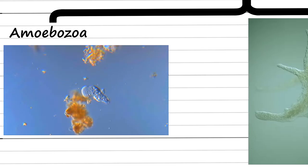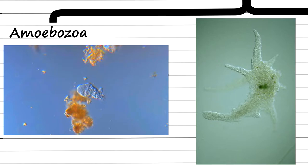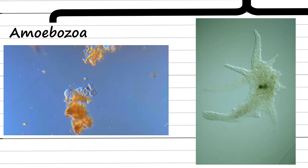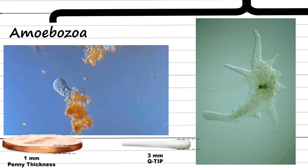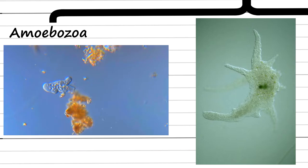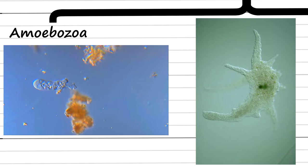Another interesting species has the dramatic name Chaos. This is the largest organism of this group and can reach lengths of 5mm, although on average they are 1–3mm. Still, this is gigantic for a unicellular organism. They feed on bacteria, algae, and other protists, and they can even feast on small multicellular invertebrates.